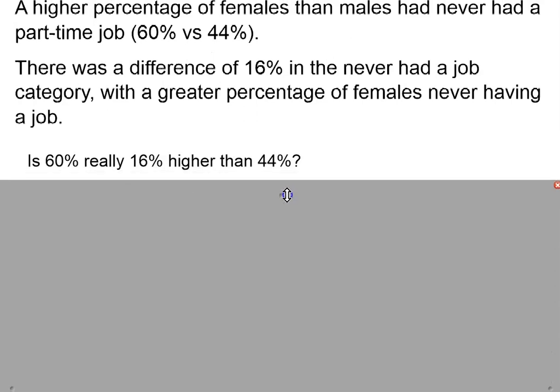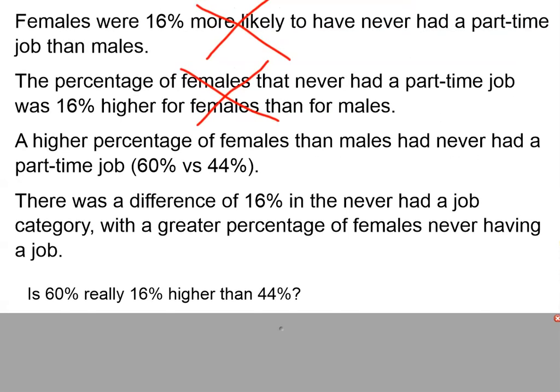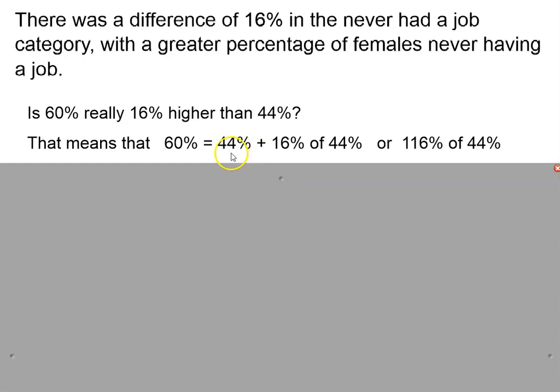When we say that females were 16% more likely to have never had a part-time job than males, or the percentage of females that never had a part-time job were 16% higher, what we're really saying is that 60% is 16% higher than 44%, which means that 60% equals 44% plus another 16% of 44%, or that 60% equals 116% of 44%.